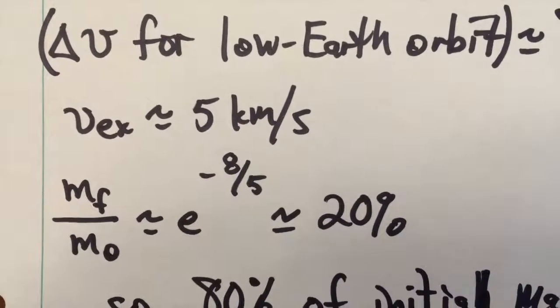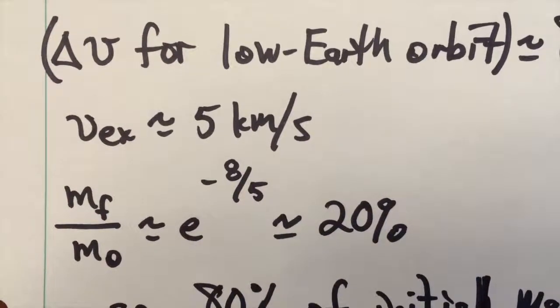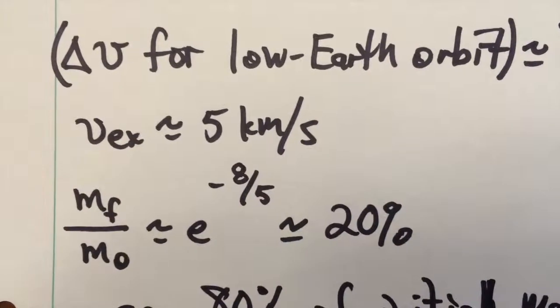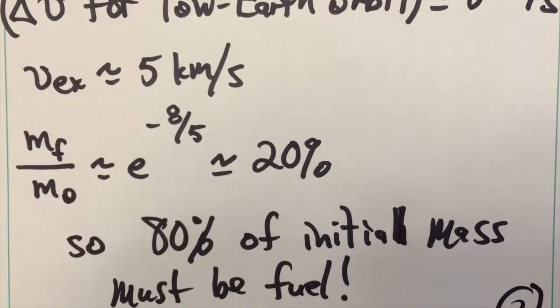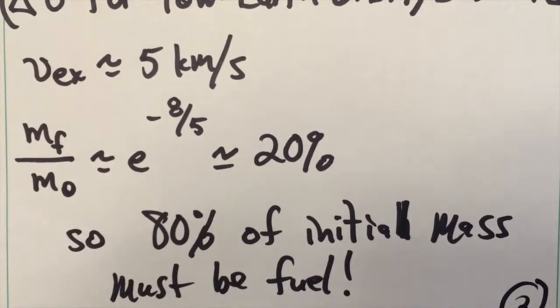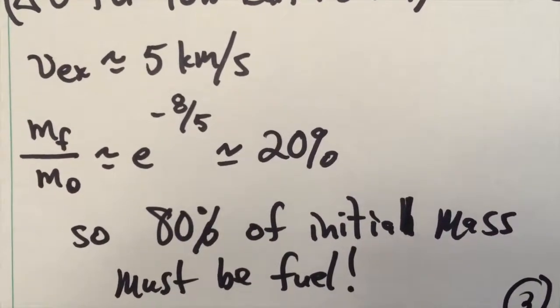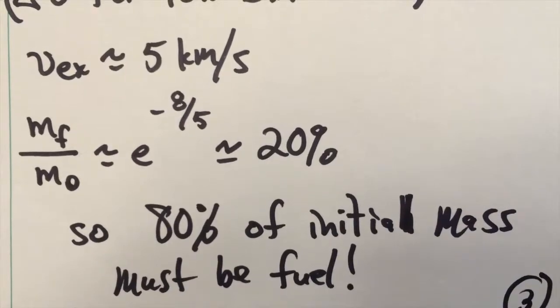So if we plug these numbers into our rocket equation here, what we find is the mass ratio is e to the minus 8 over 5, or about 20%. So that means about 80% of the initial mass in the rocket has to be ejected as exhaust in order to launch this object into low Earth orbit.